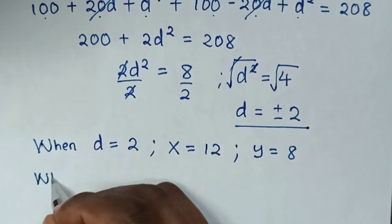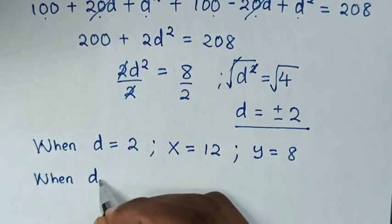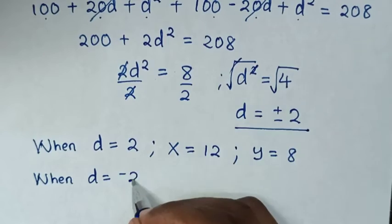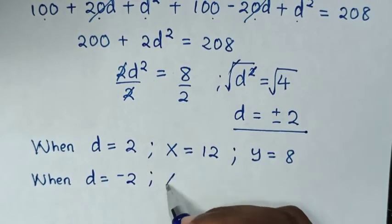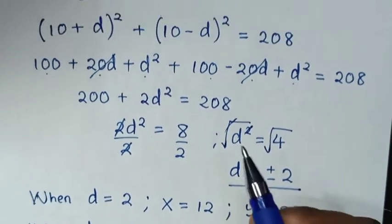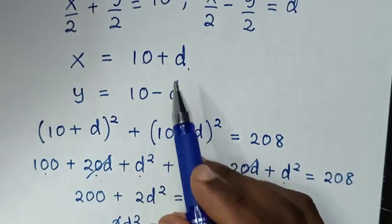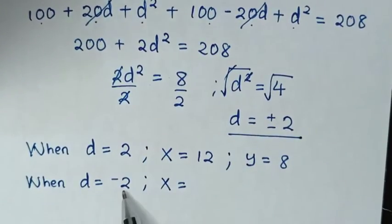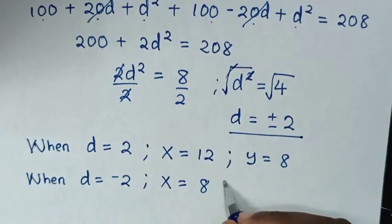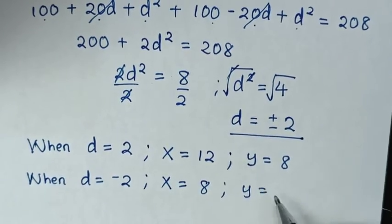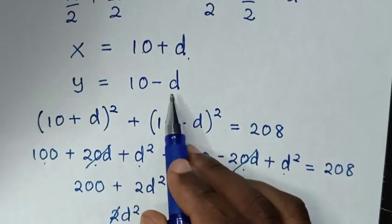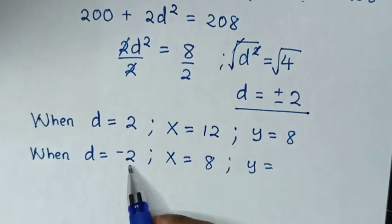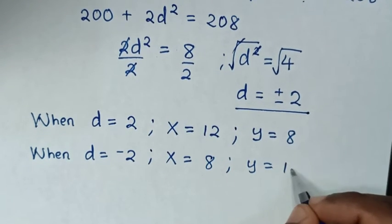Then when d is equal to negative 2, then x will be equal to, from x is equal to 10 plus d, it will be 10 plus negative 2, which is 8. Then y will be equal to, from y is 10 minus d and d is negative 2, so 10 minus negative 2 is 12.